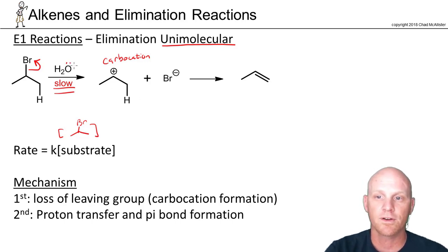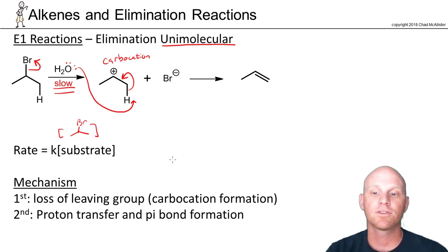Then we're going to lead to proton transfer and pi bond formation. Our base, water, is going to come in and deprotonate that hydrogen, freeing up these electrons to form the pi bond. So it's still proton transfer, pi bond formation, and loss of leaving group, but split across two steps. Loss of leaving group first, and then proton transfer and pi bond formation happening in the second step instead.